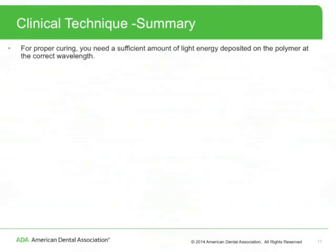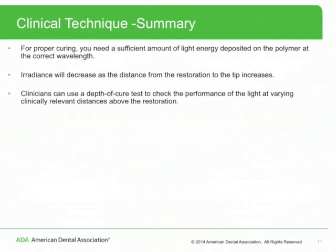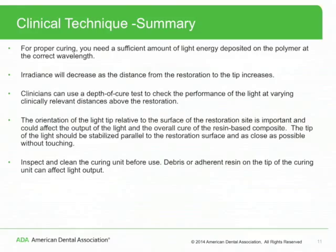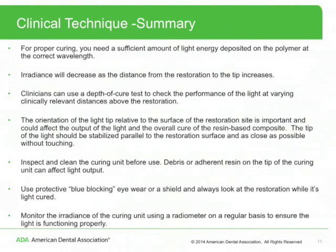In summary, for proper curing you need a sufficient amount of light energy deposited on the polymer at the correct wavelength. Irradiance will decrease as the distance from the restoration to the tip increases. Clinicians can use a depth of cure test to check light performance at varying clinically relevant distances. The orientation of the light tip relative to the restoration surface is important and could affect light output and overall cure. The tip should be stabilized parallel to the restoration surface and as close as possible without touching. Inspect and clean the curing unit before use, as debris and adherent resin can affect light output. Use protective blue-blocking eyewear or a shield, and always look at the restoration while it is light-cured. Monitor the irradiance of the curing unit using a radiometer on a regular basis to ensure the light is functioning properly.